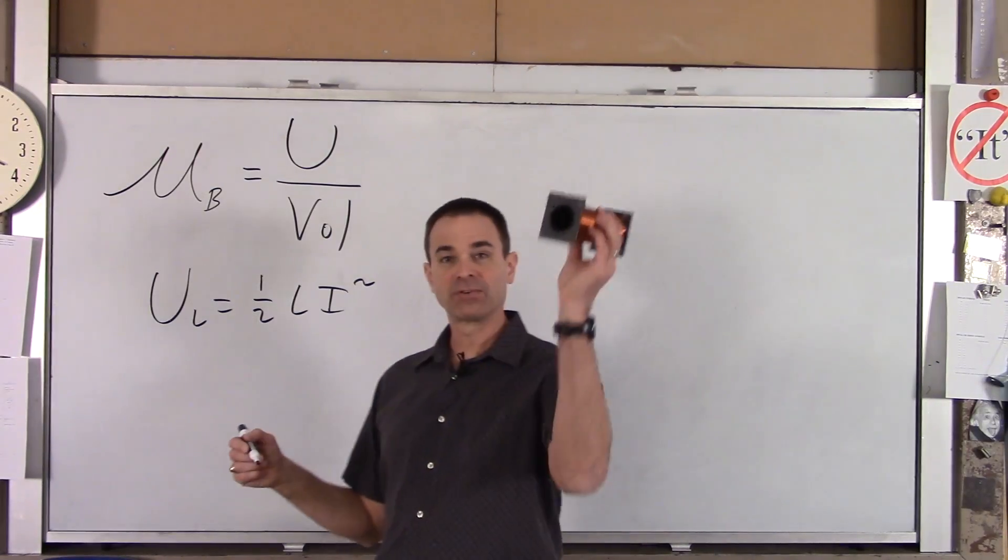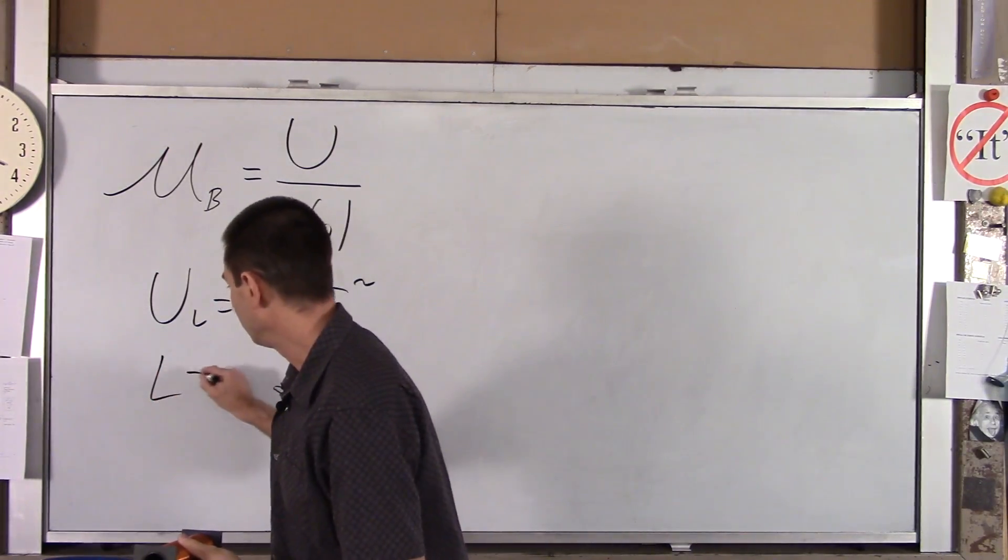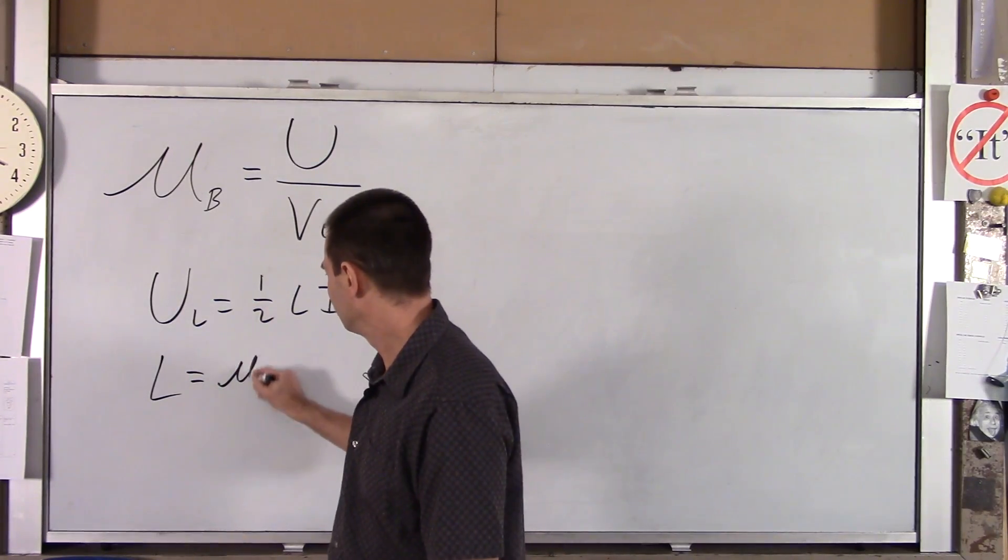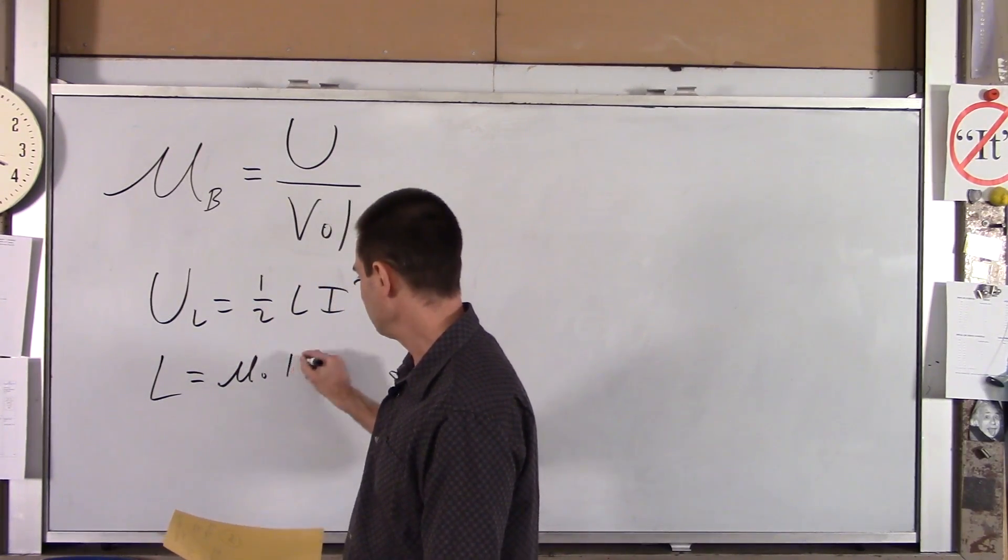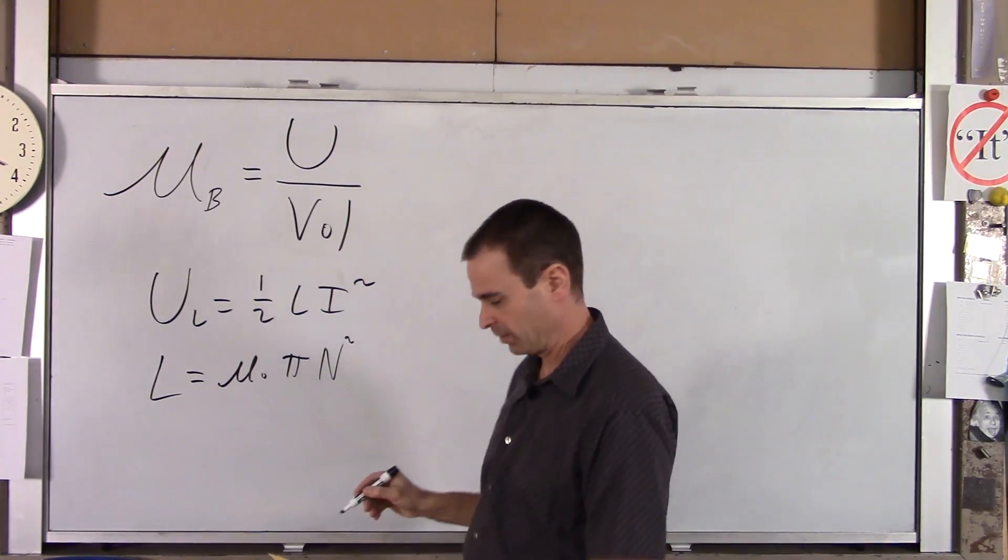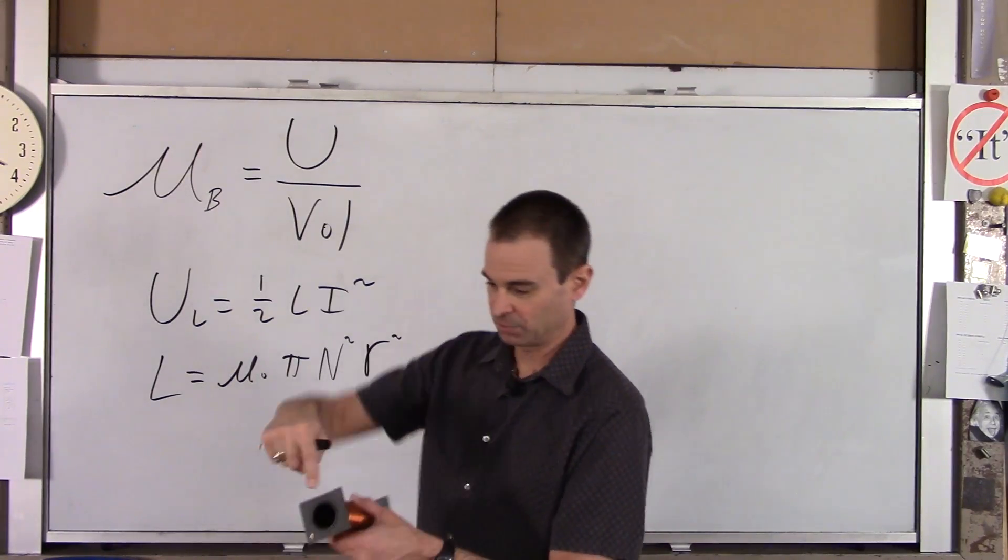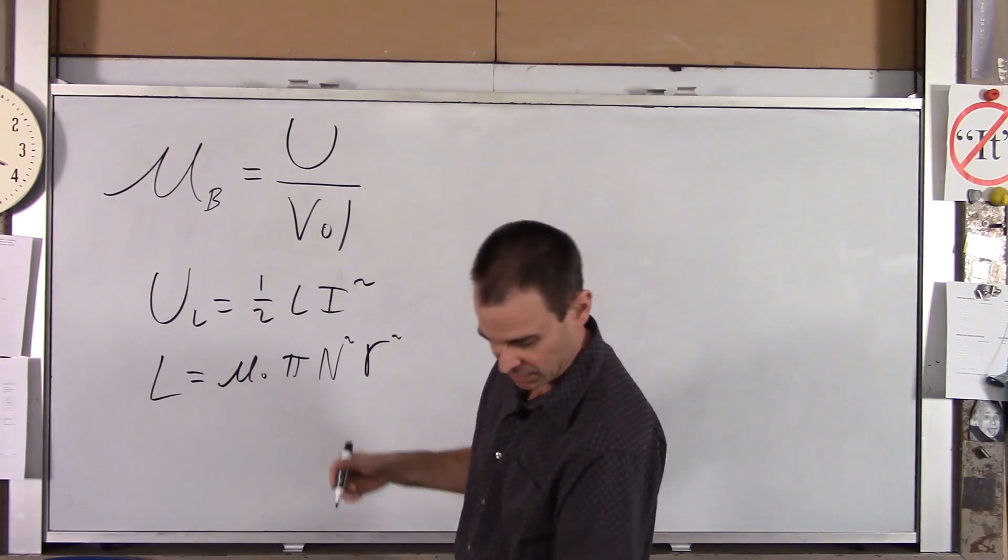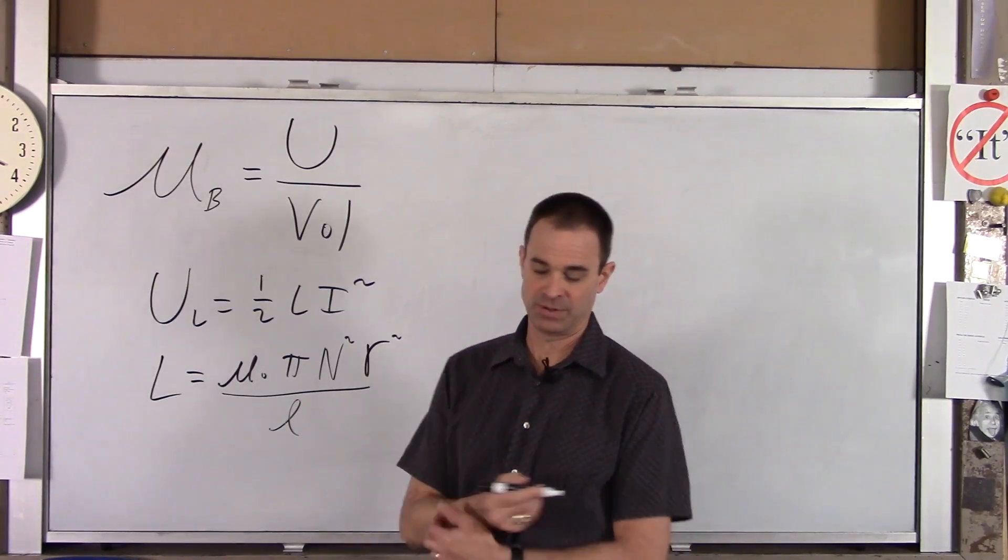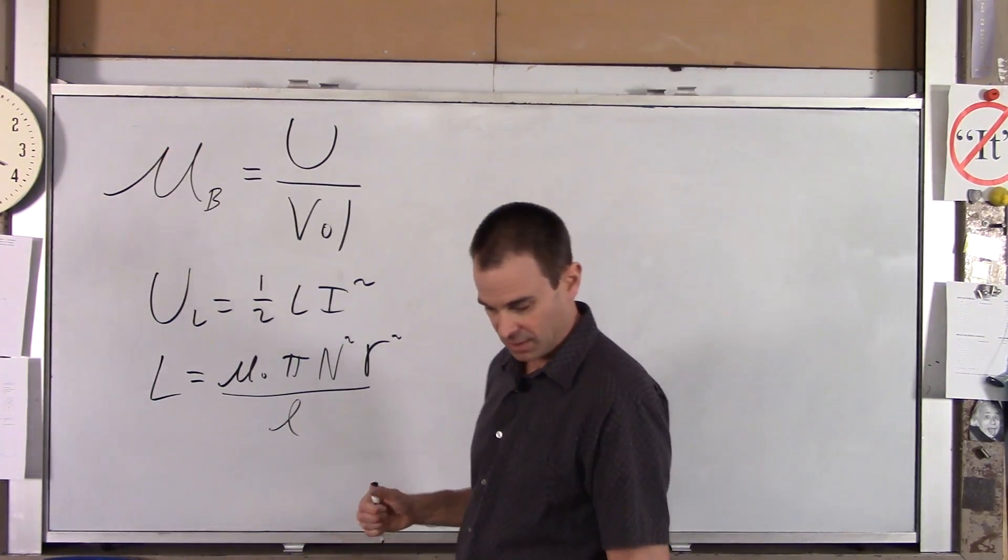So what is L for a solenoid? What is the inductance of a solenoid? Well, L equals, and I'm going to write this down, μ naught pi, the number of turns of the solenoid squared times the radius of the solenoid squared, so number of turns, radius being the radius, that circle right there, over the length of the solenoid. So that's the equation for L of a solenoid.